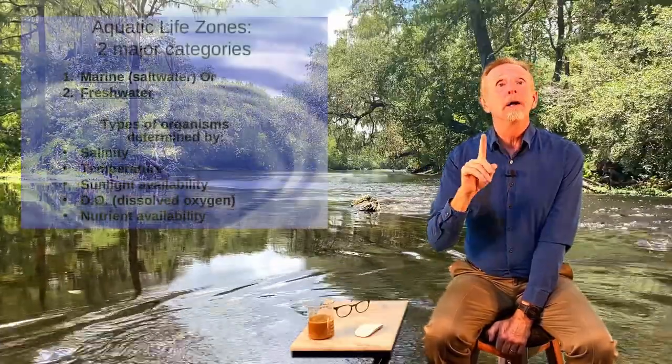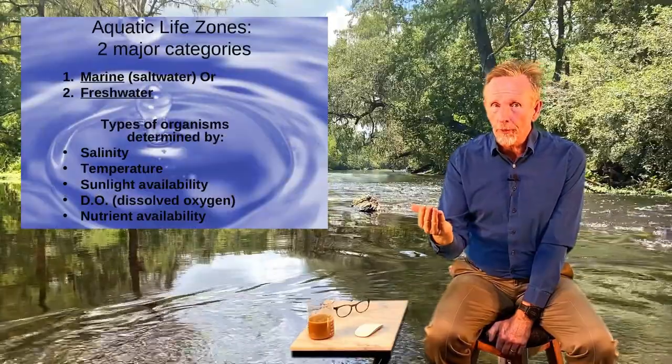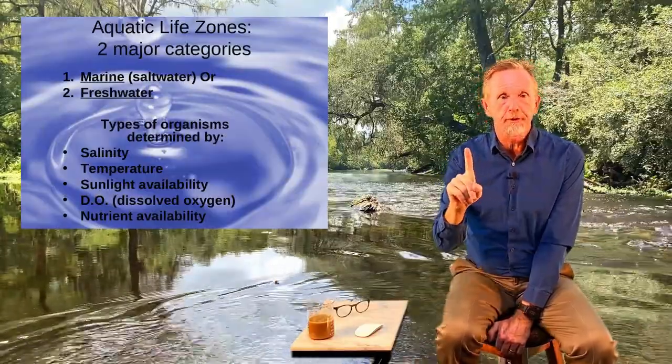Salt water and fresh water aquatic life zones cover about three-fourths of the Earth's surface. There are four items that everything in an aquatic ecosystem depends on — the amounts of these things dictate how many and what kinds of organisms are present. First: temperature. Some things can't survive in cold water, some can't survive in hot water, so temperature is a key factor.